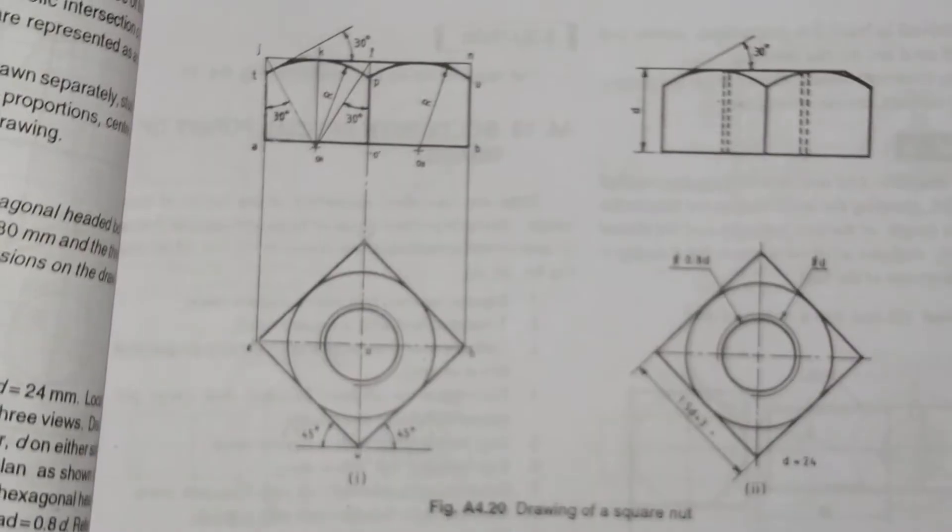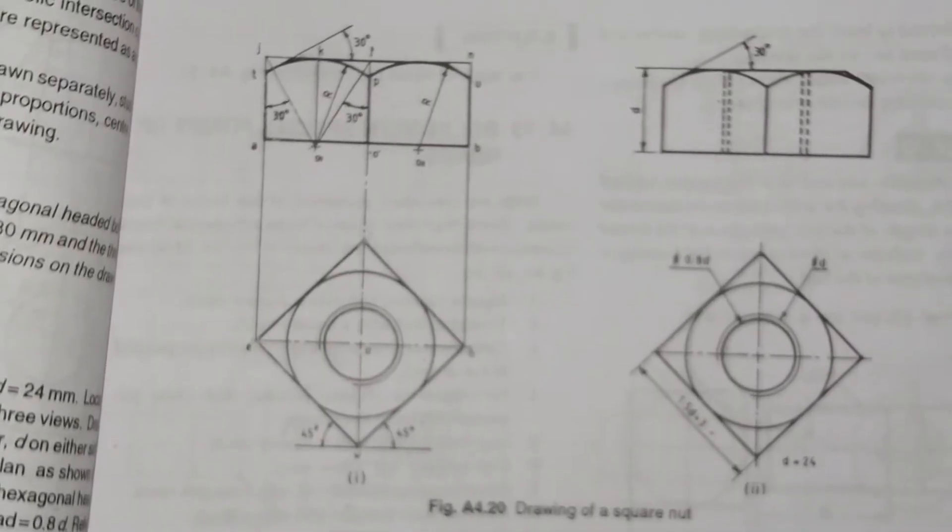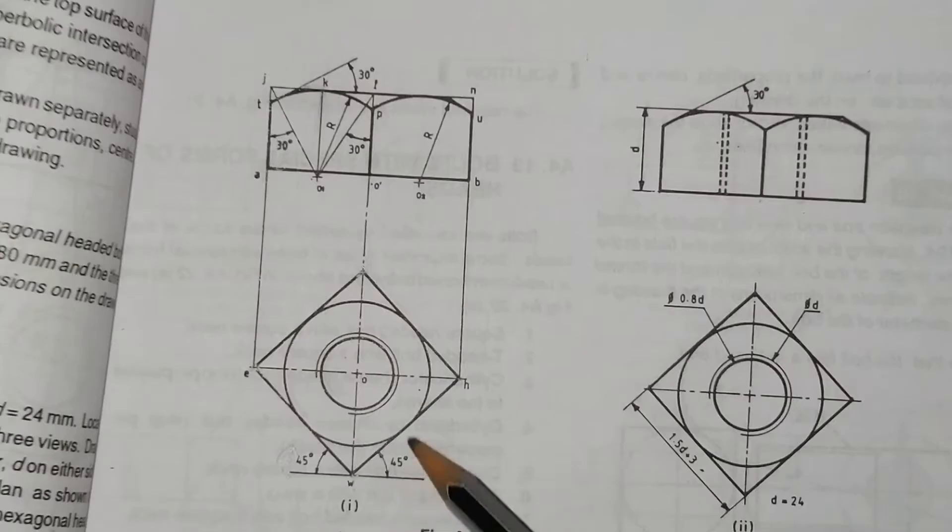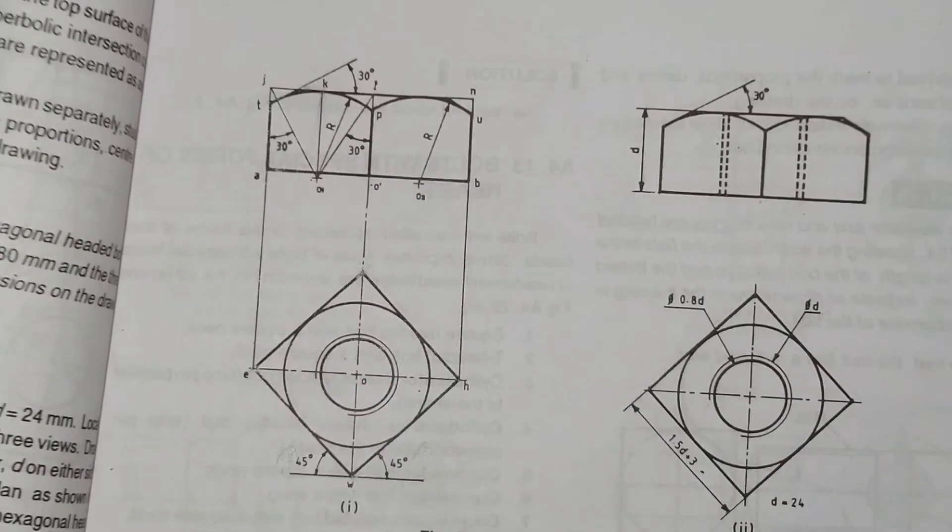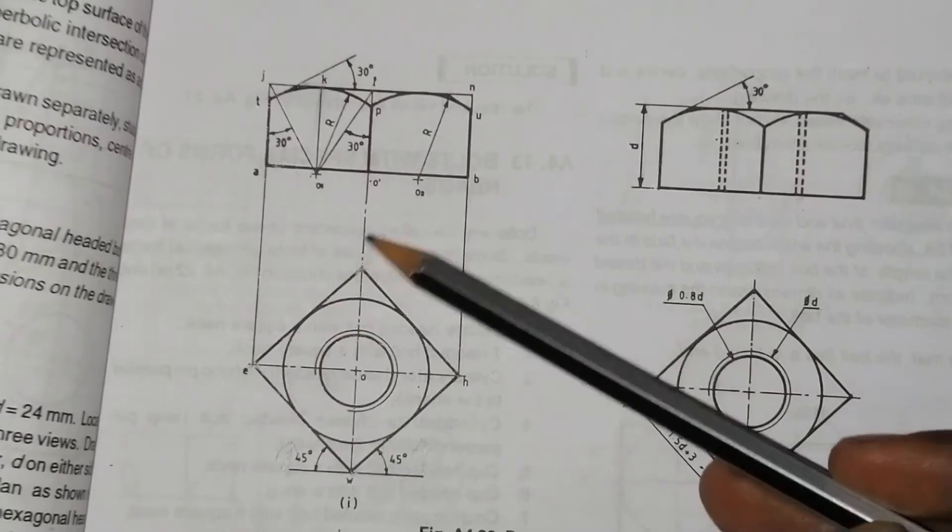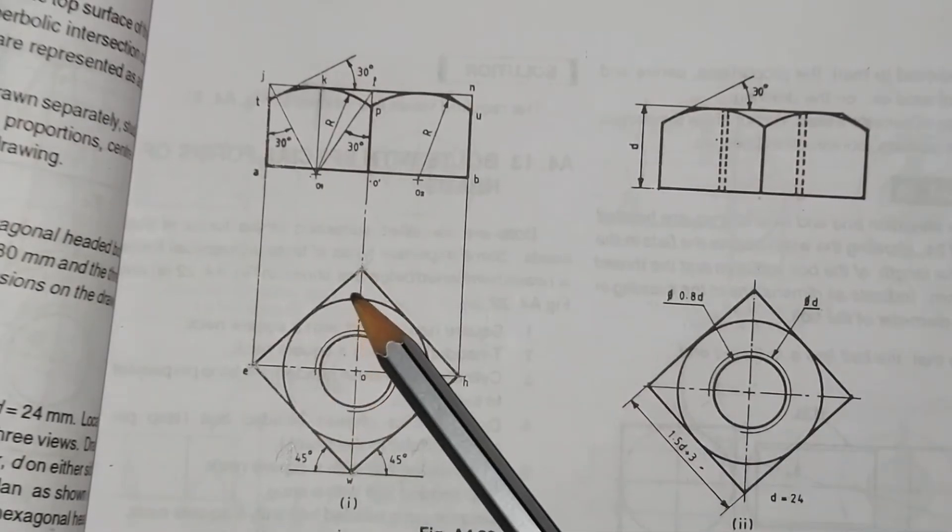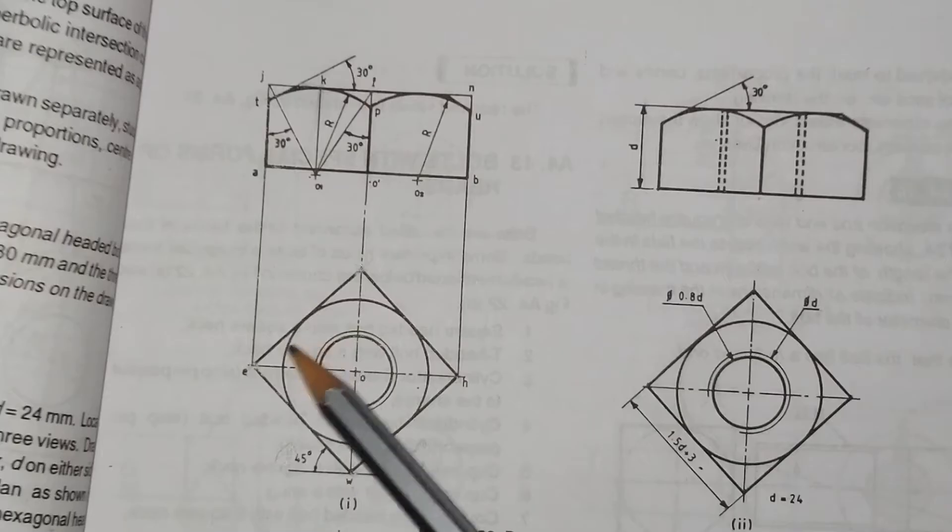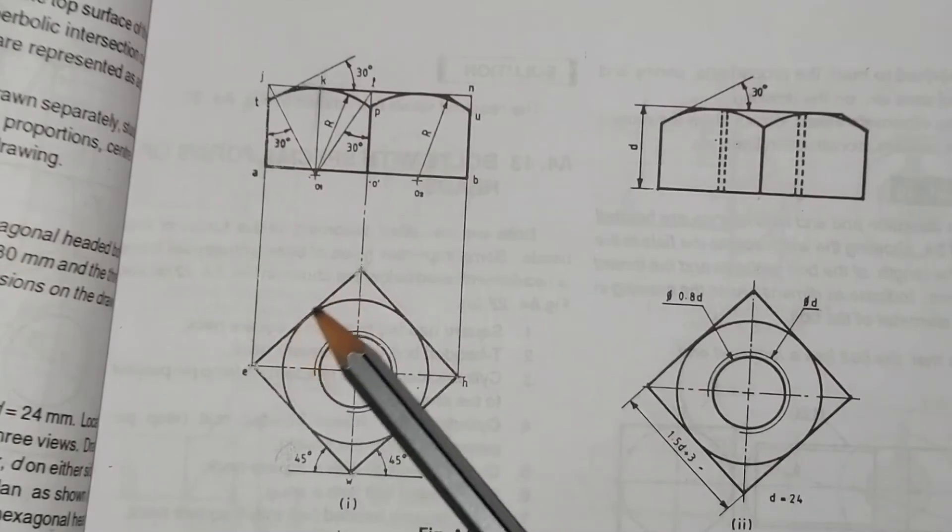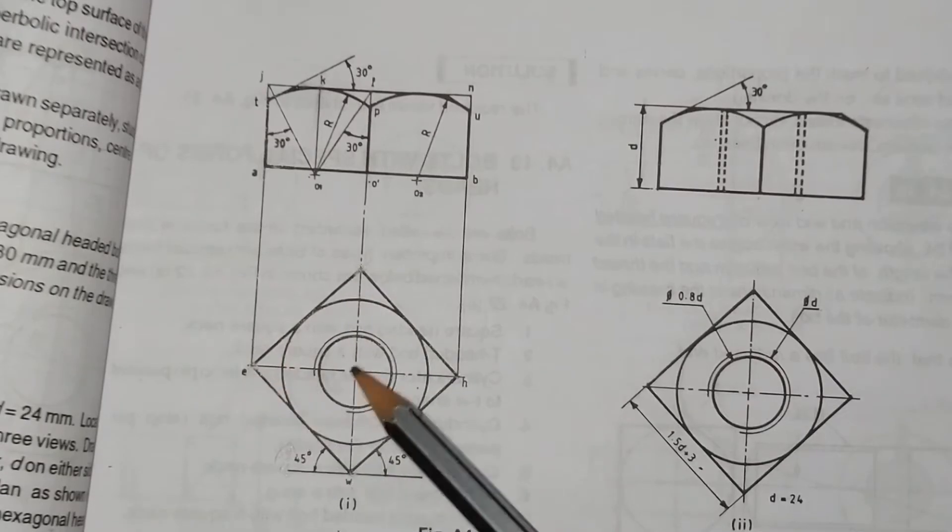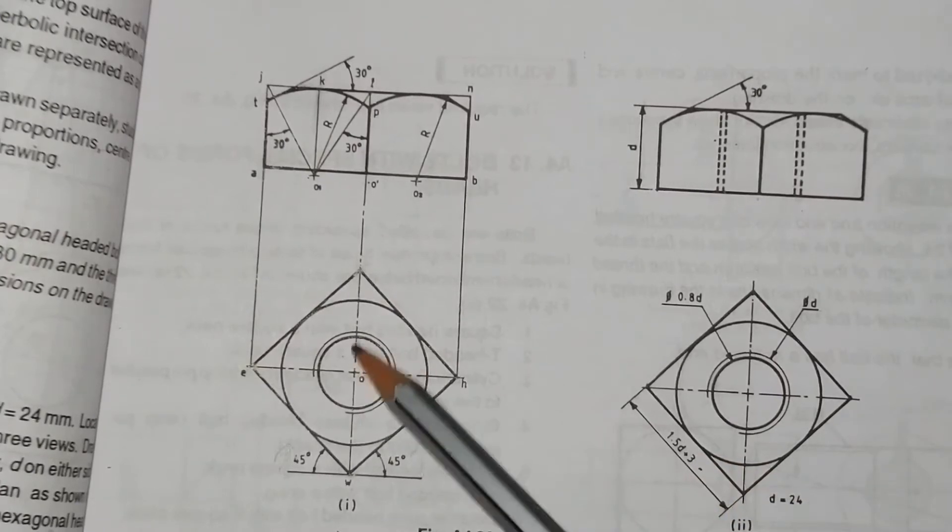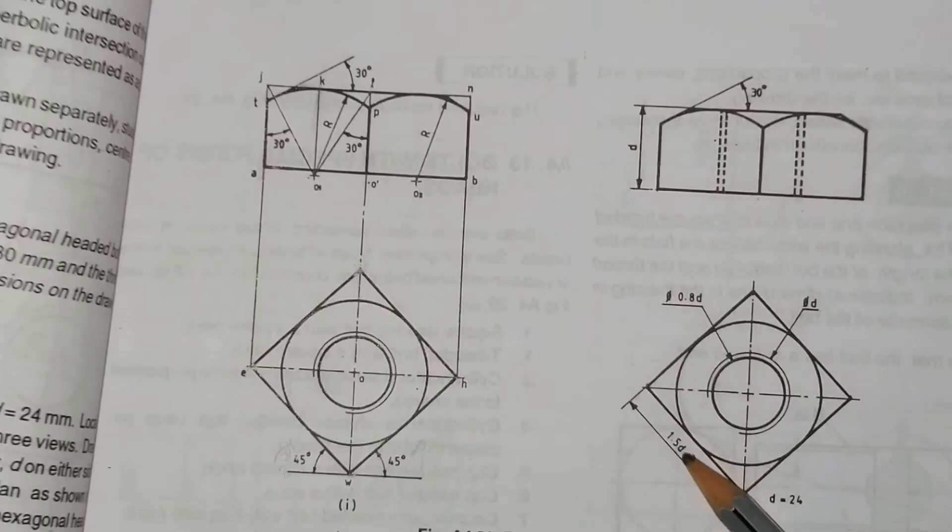We will go ahead in the front view of a square headed nut. The front view is drawn with a center line, a chain dotted center line. The front view is going to have a chamfer circle and the edges. The dimension value is 1.5d plus 3. The diameter is 1.5d plus 3. The dimension for d is 24.